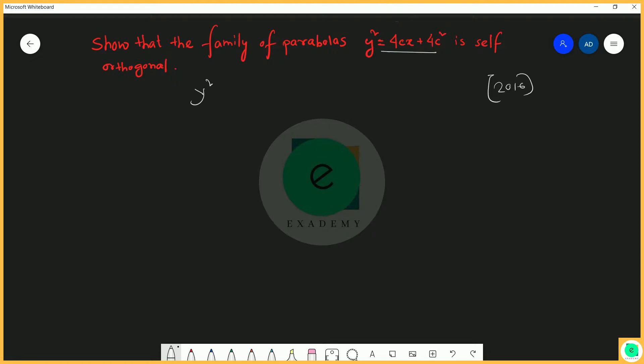We are going to differentiate it with respect to x. So if we differentiate here, we get 2y·dy/dx = 4C. So the value of C is 2y·dy/dx divided by 4.